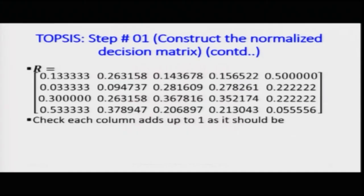Coming back to the slide — using this normalization concept, do not be too bothered about the specific cell values; focus on the concept and use the Excel sheet to understand it. Each column adds up to one since we are doing column-wise normalization. These values mean that on a normalized scale, for the first column, alternative one gets about thirteen percent, alternative two about three percent, alternative three about thirty percent, and alternative four about fifty-three percent.